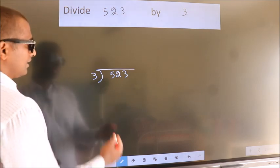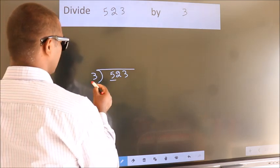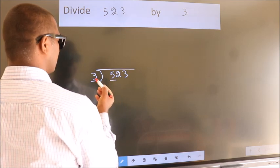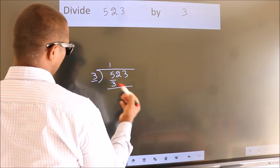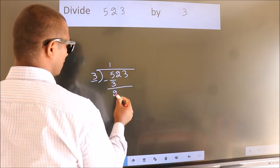Next. Here we have 5, here 3. A number close to 5 in the 3 table is 3 1s 3. Now, we should subtract. We get 2.